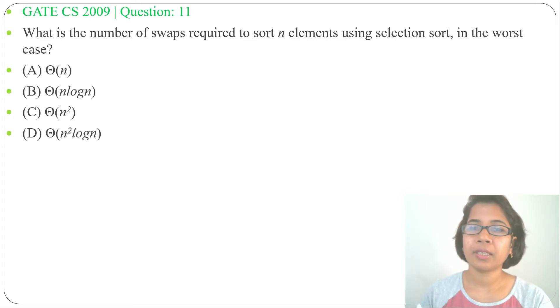Like this, we'll sort the array. So in every iteration, we are just doing one swap. We are selecting the minimum element and swapping it with its position. And how many iterations are there? There are n minus one iterations.